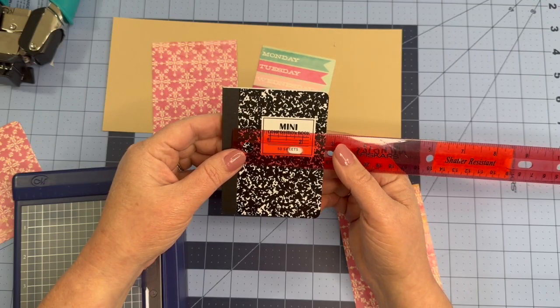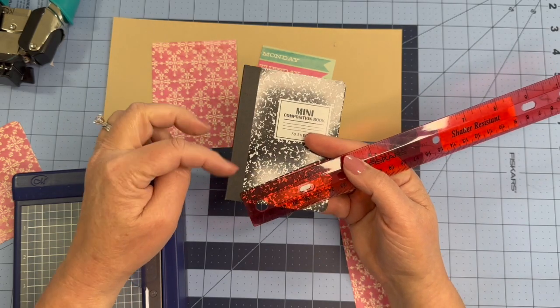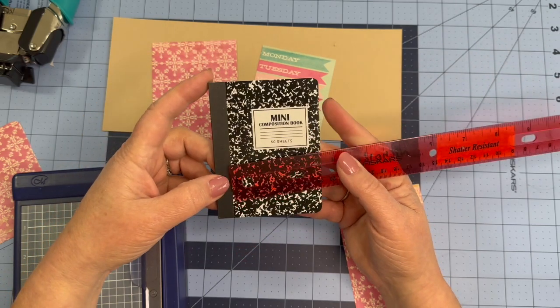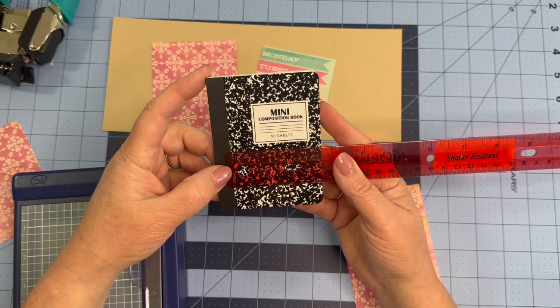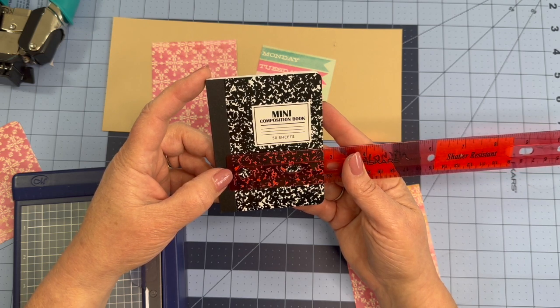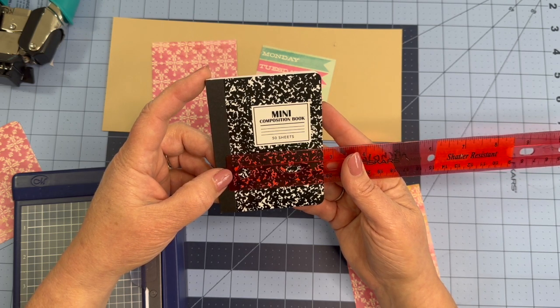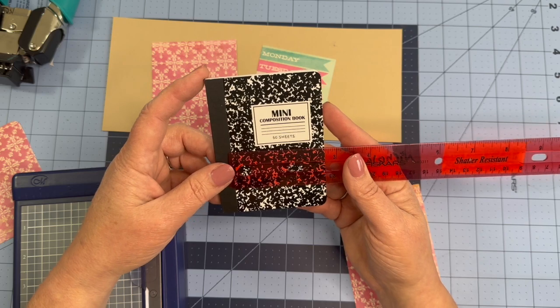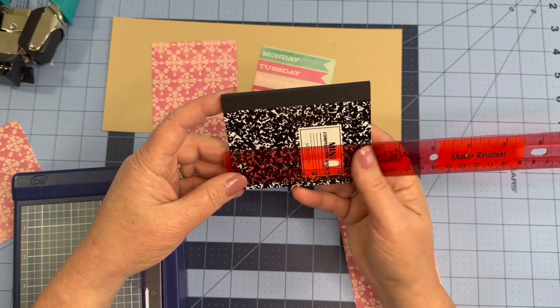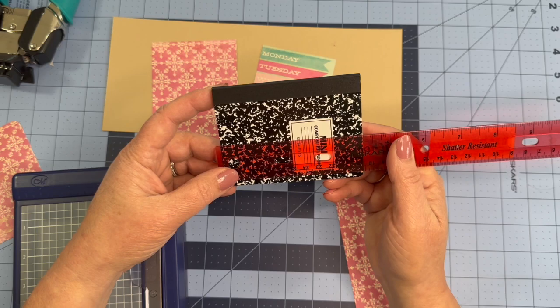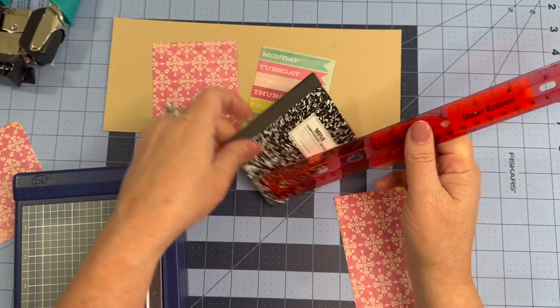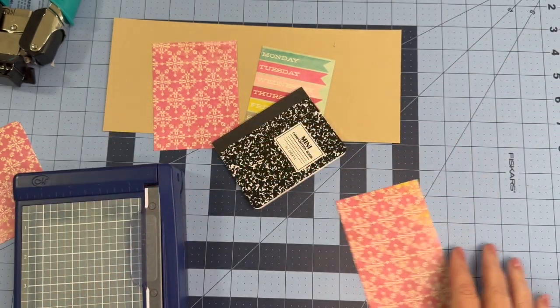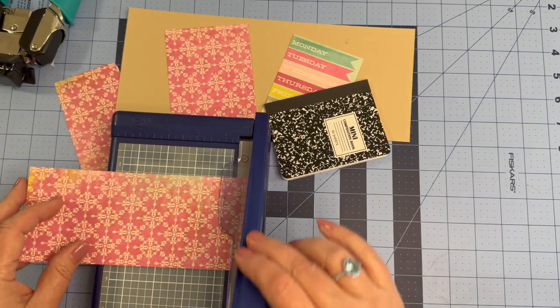So my mini composition book, I want to leave this little bit of black binding on it and keep it showing. My mini composition book is about two and three quarters wide by four and a quarter tall. Four and a quarter, yeah.